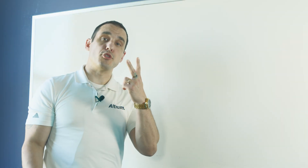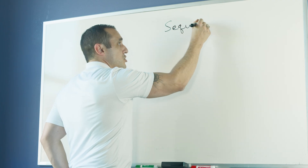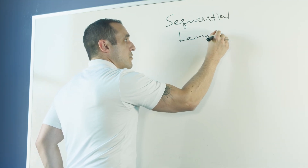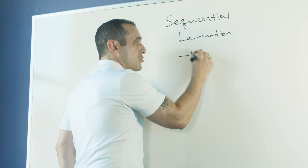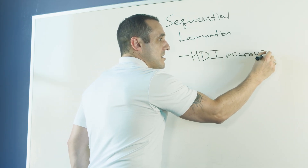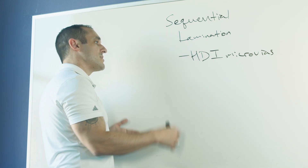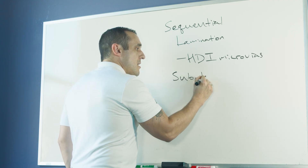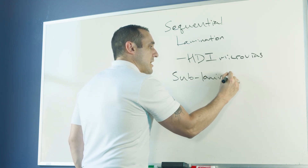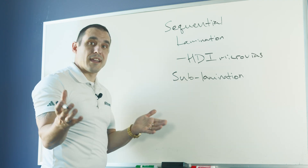We're going to be talking about the two manufacturing processes used to produce blind vias and buried vias in a PCB stack up. The first, which we have not talked about yet, is sequential lamination. In sequential lamination we are laying down sheets of dielectric material and then building up HDI structures or micro vias in the PCB stack up on specific layers. The other approach is sub-laminations, where you build up sub-stacks of PCBs and then laminate them together using an adhesive or prepreg.